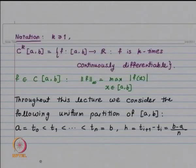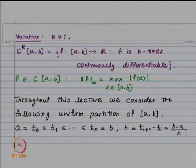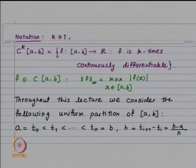Let me introduce the notation. For k ≥ 1, C^k[a,b] consists of functions that are k times continuously differentiable on [a,b]; this is a vector space. For a continuous function, the maximum norm is max|f(x)| for x in [a,b]. Throughout this lecture we use the uniform partition a = t_0 < t_1 < … < t_n = b, where t_{i+1} − t_i = h = (b − a)/n for i = 0, 1, …, n−1.